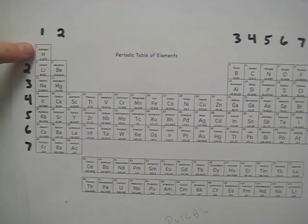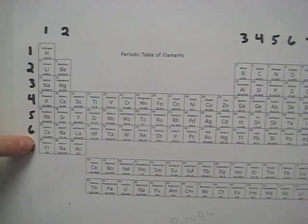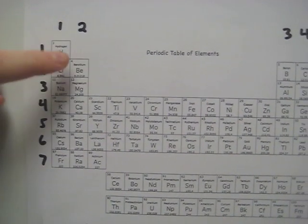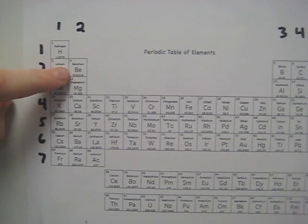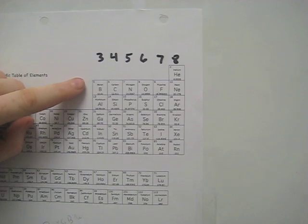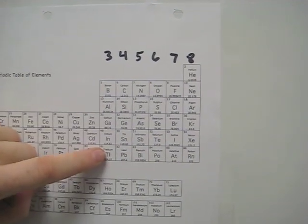For instance, every element in column one has one valence electron. Like hydrogen and lithium both have one valence electron. Every element in column two has two valence electrons. The same applies for columns three through eight. In column three all the elements have three valence electrons and so forth.